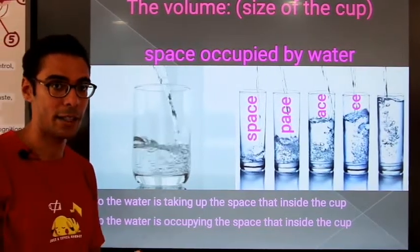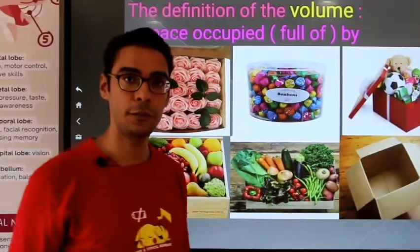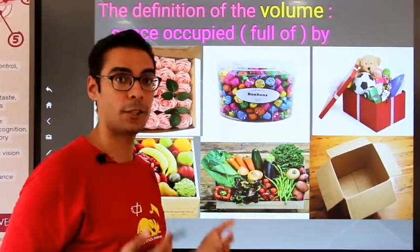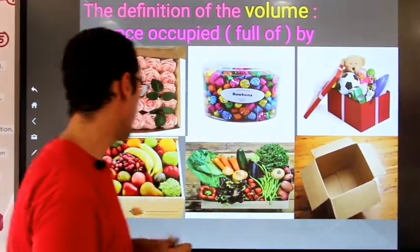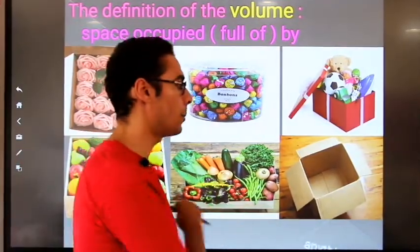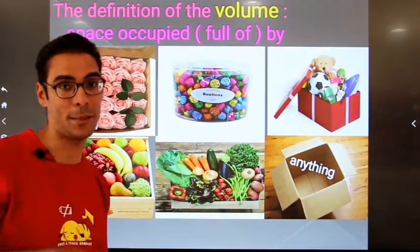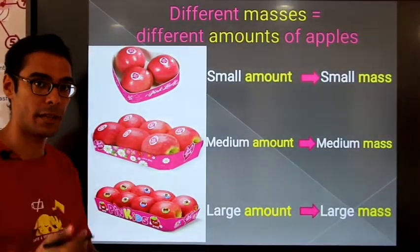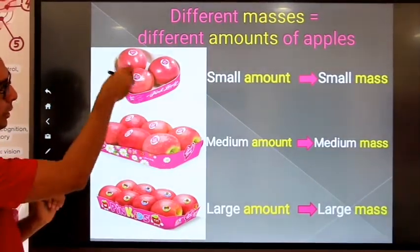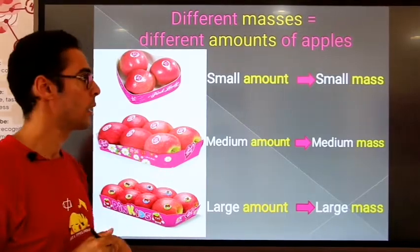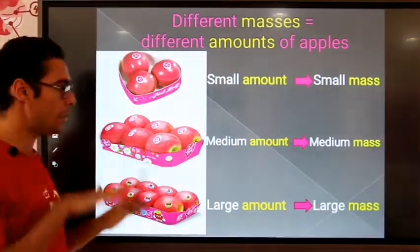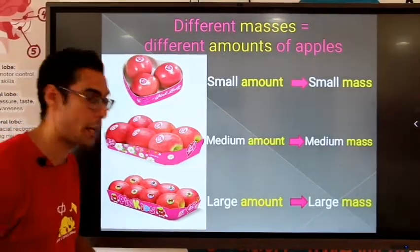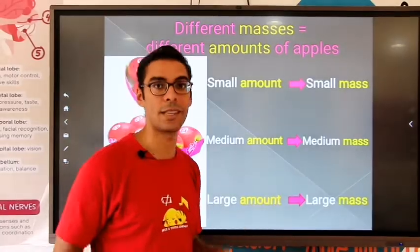Here are different examples: a space occupied by flour, chocolates, toys, fruits, vegetables — or a space occupied by anything. This is what is meant by volume — the space occupied by a matter. Now let's talk about mass. Mass is a word that describes how heavy or light things are. A small amount of apples represents a small mass, a medium amount represents medium mass, and a large amount of apples means they are heavy — they represent a large mass.